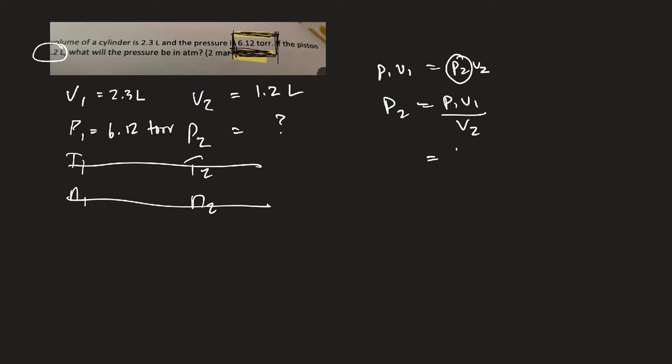So P1, 2.3 liters... V1... oh, I've got those mixed up. But they're both on the top, so it doesn't matter. Over V2 is 1.2 liters. Okay, so if I do the math on this...